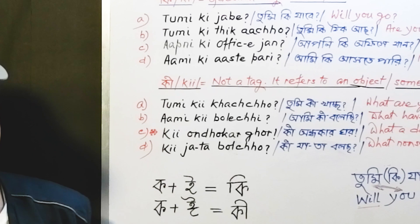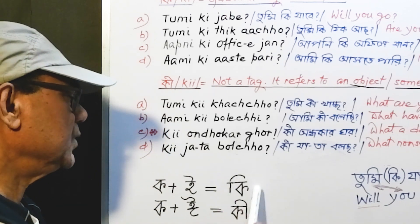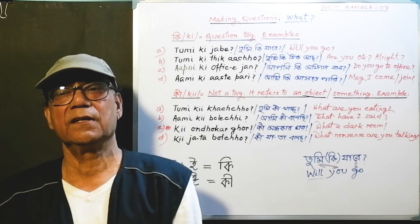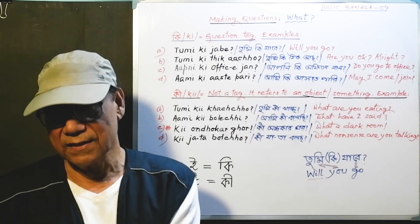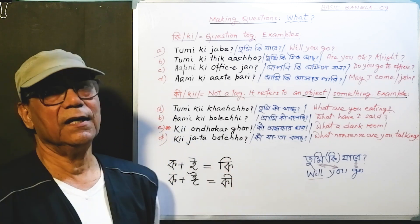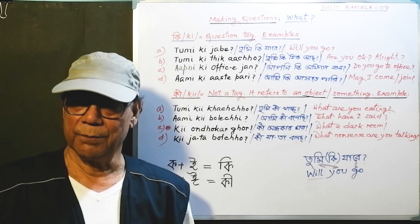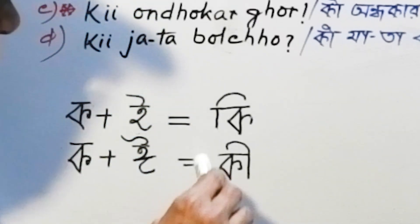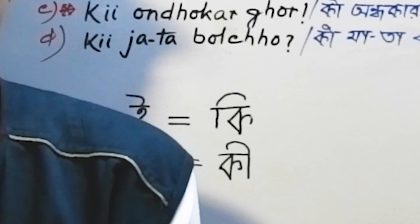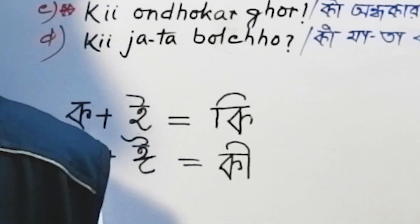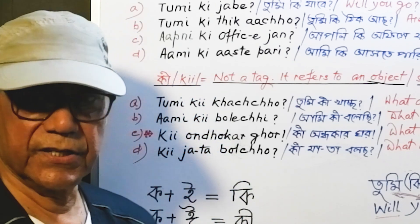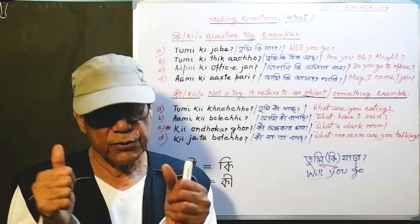Remember one thing: nowadays there is a tendency to ignore the distinction and use the same ki in both cases. But when you utter the sentence, stress and intonation make the difference very clear. So it is better to learn both ki's so you don't have any problem later. Remember: unstressed ki gives a yes/no answer, and stressed ki is close to the English word 'what' and needs a solid answer. If you have any problem, please write to us — but first, see the text associated with this video. This much today. Have a nice time.